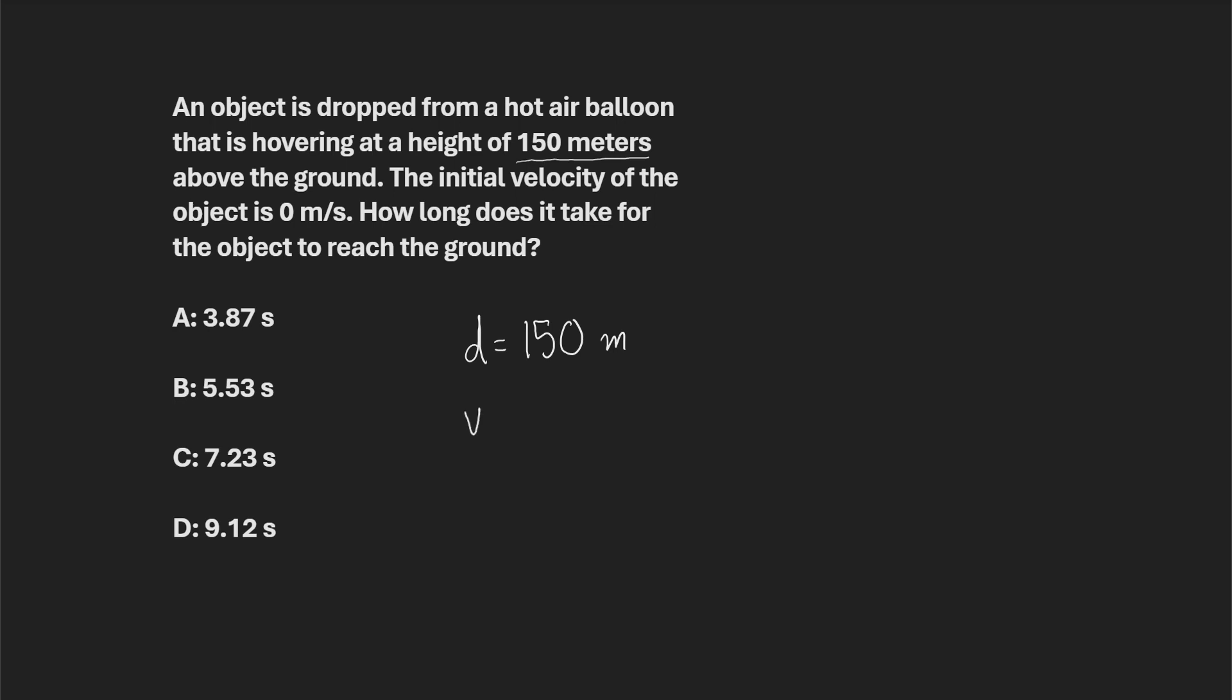Initial velocity, of course, is going to be zero, but because it's zero, it's not really going to end up being relevant. And then what else do we know? We know acceleration, and that one's not as obvious, but of course, we've got an object falling. If we've got an object falling, then it's accelerating due to gravity, and that's always 10 meters per second squared.